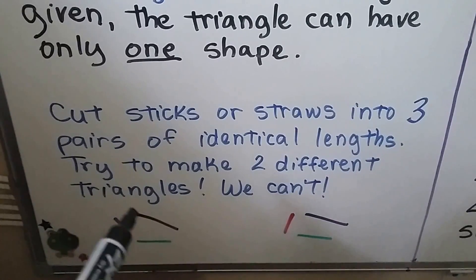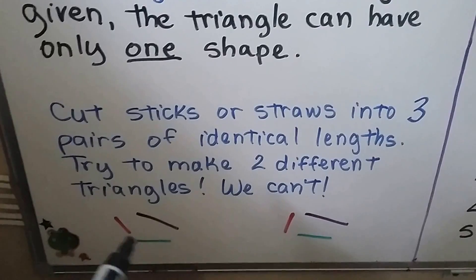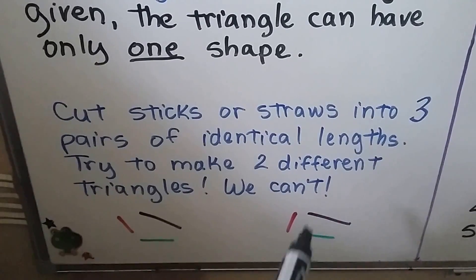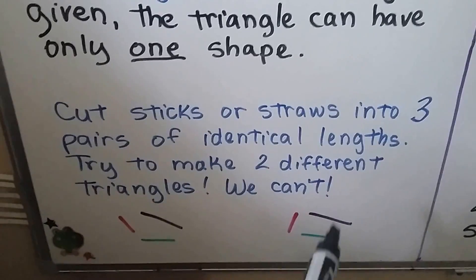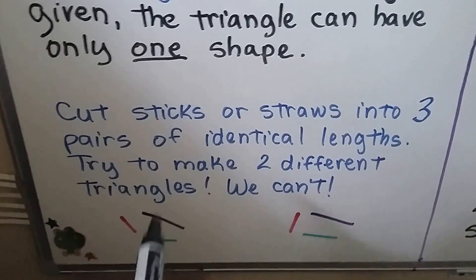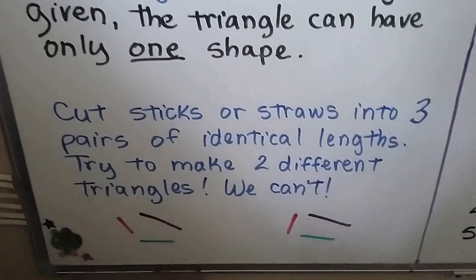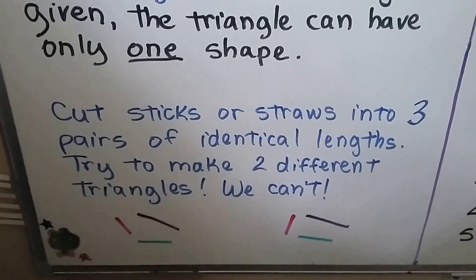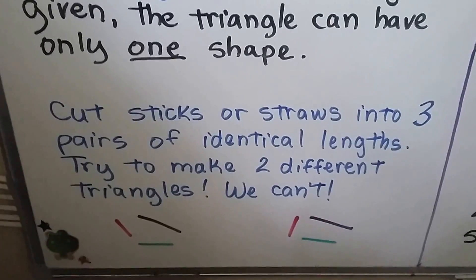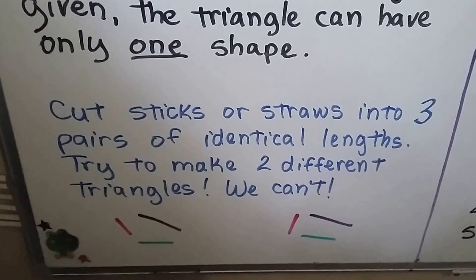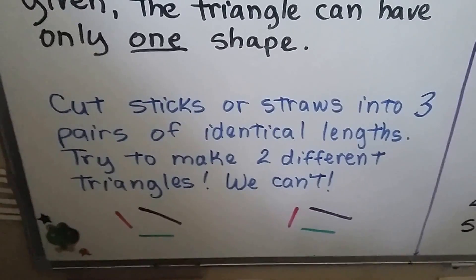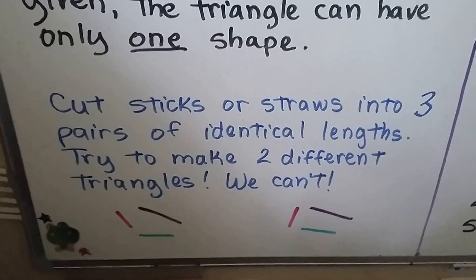Then take one of each of the measures and make a triangle. Take the ones remaining and try to make a triangle different from the first one. What's going to happen is you're not going to be able to. If we've got three different pairs of identical lengths, we're going to make the same triangle.